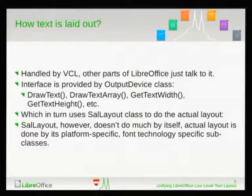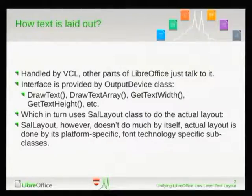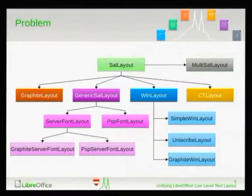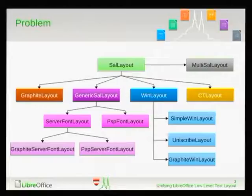And SalLayout itself does not do text layout either. It uses subclasses for each platform, for each font technology, even for each writing system. So that is the current structure. We have about ten sub-implementations of SalLayout. We have graphite layout for graphite fonts. We have generic SalLayout.